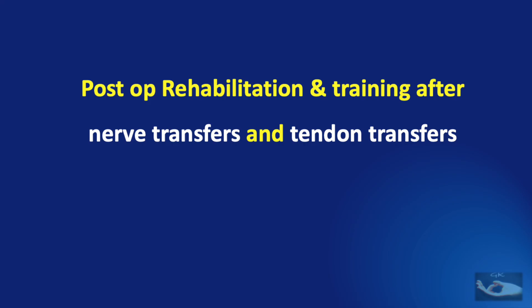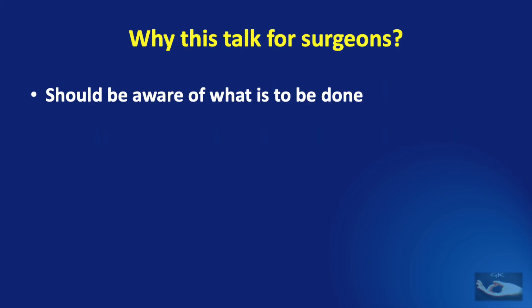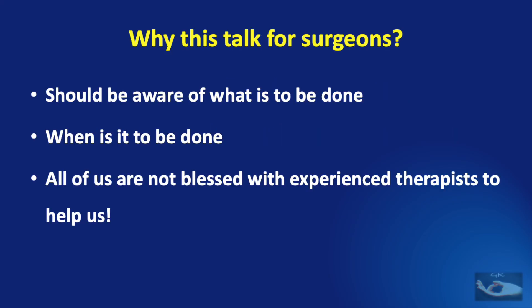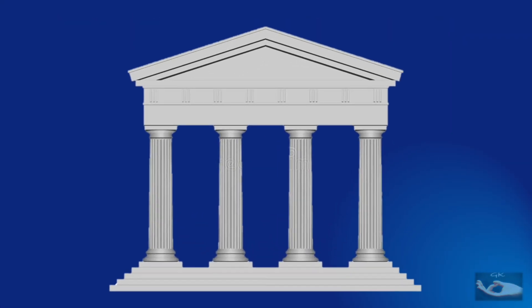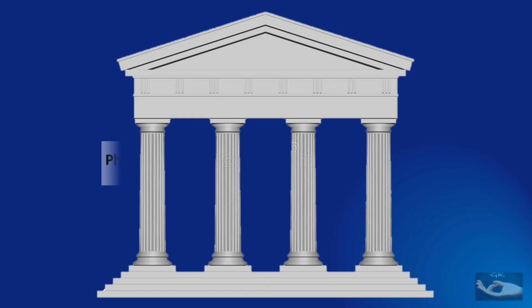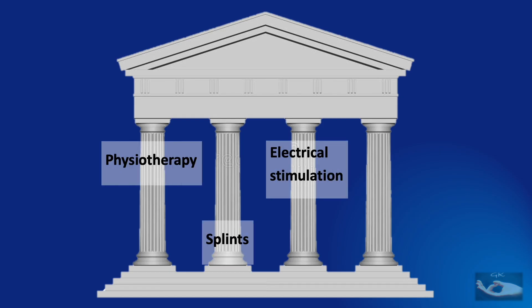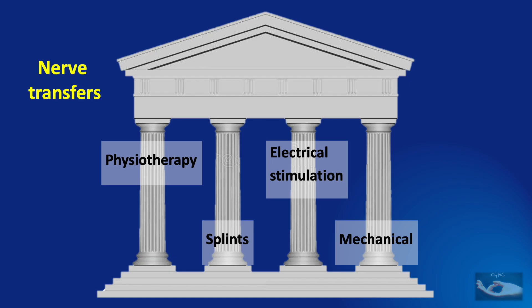The post-operative rehabilitation and training after nerve transfers and tendon transfers. Surgeons should be aware of what is to be done and when it is to be done, because all of us are not blessed with experienced therapists to help us. Basically, rehabilitation after nerve or tendon transfers consists of four main modalities: physiotherapy, splints, electrical stimulation and mechanical methods consisting of scar massage, ultrasound massage and so on.